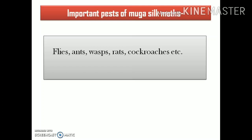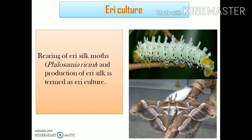Pests are organisms — animals or plants — harmful to human activity. The important pests of Muga silk moths include different types of flies, ants, rats, wasps, cockroaches, and others, which can cause great harm to the entire crops of Muga silkworms.